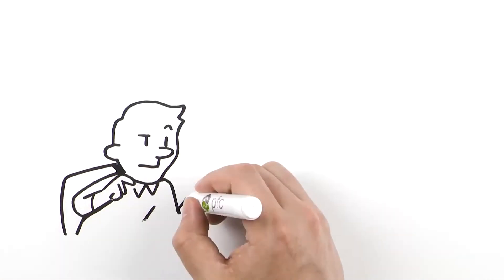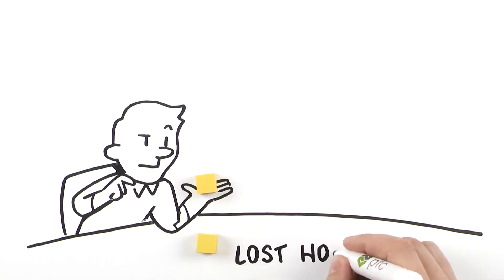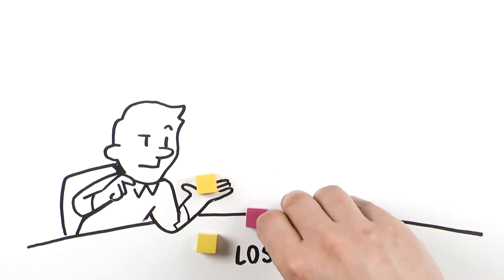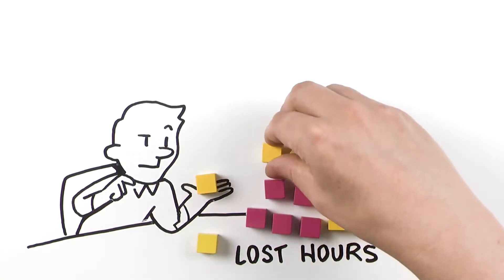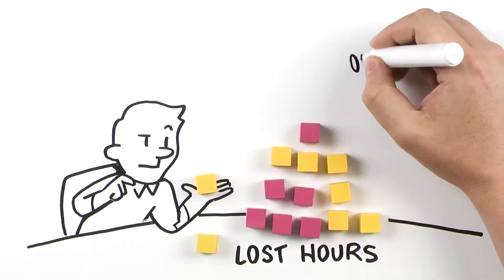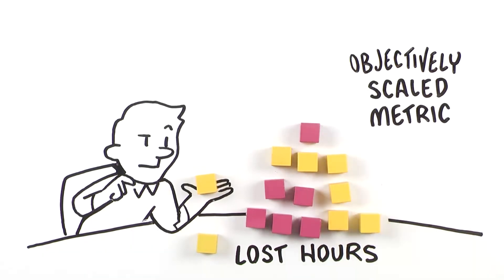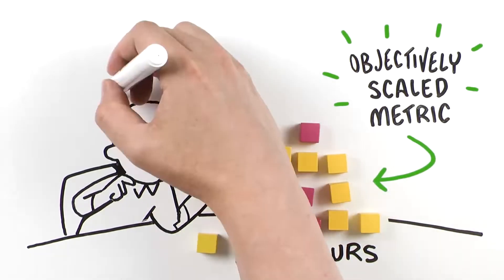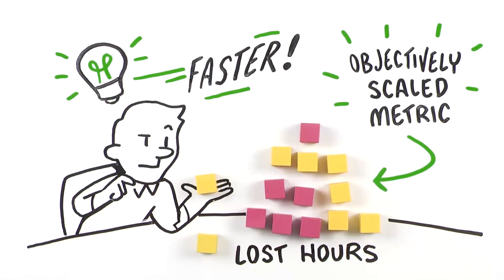If you could get a full accounting of all your lost hours in real time, at the operator level or aggregated to the unit, line, or higher level, and shown using that objectively scaled metric of hours, could you make better decisions, faster, about what your next continuous improvement target should be?